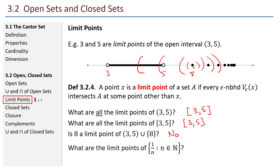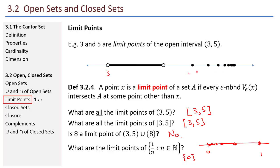Pause the video and think about this one: what are the limit points of this set? This is the situation where I have 1, 1/2, 1/3, 1/4, 1/5, 1/6 — an infinite sequence that approaches 0 from the right but never actually touches 0. The only limit point of this whole set is, in fact, 0 itself. We have a sequence of points that approach some limit, and where they approach is a limit point because epsilon neighborhoods will always contain points from the set, even though the limit point itself isn't in the set.